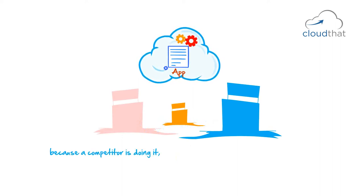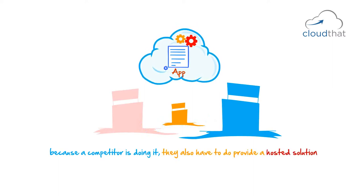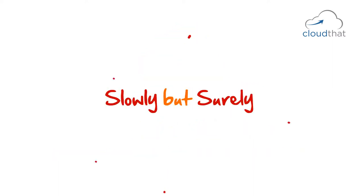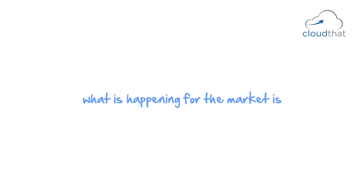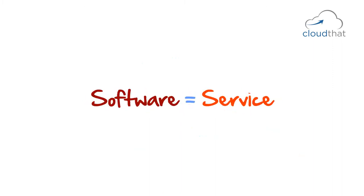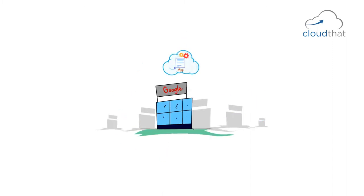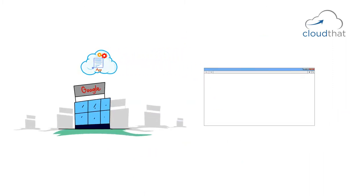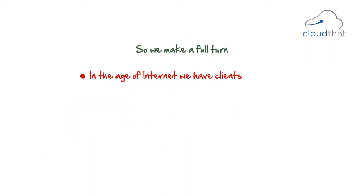As hosted products like Google Docs gained a lot of traction, companies like Microsoft — which had Office sold on CDs — were forced to launch similar products, and Microsoft launched Office 365, also a hosted solution. Not everyone wants to provide hosted solutions willingly, but because a competitor is doing it, they may be forced to as well. Slowly but surely, software is becoming a service — providers are hosting their applications and we are accessing them via browsers, making a full turn back to centralization.